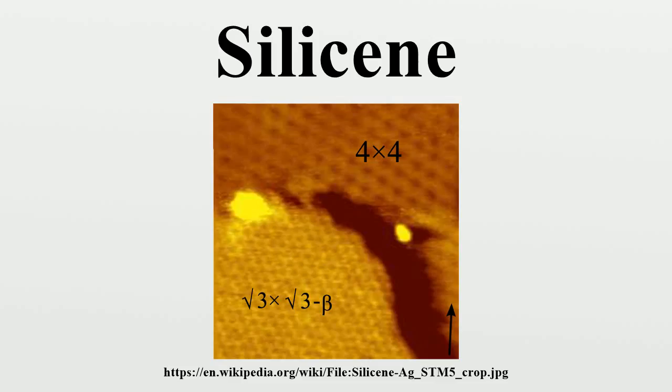Density functional theory calculations showed that silicon atoms tend to form such honeycomb structures on silver, and adopt a slight curvature that makes the graphene-like configuration more likely.